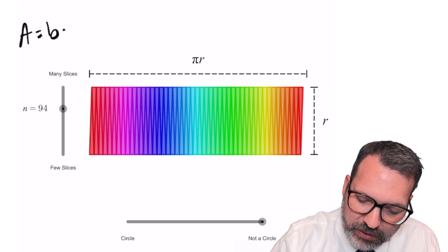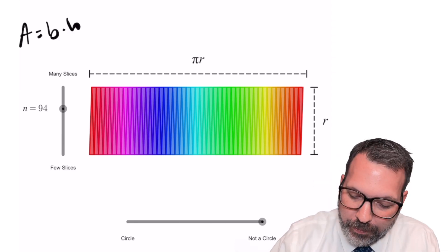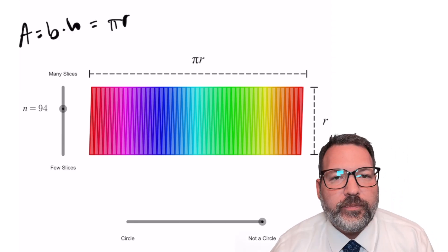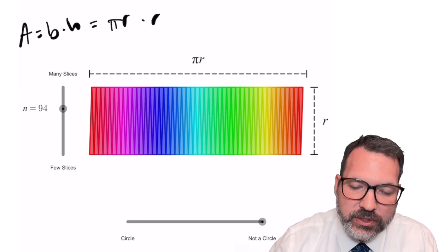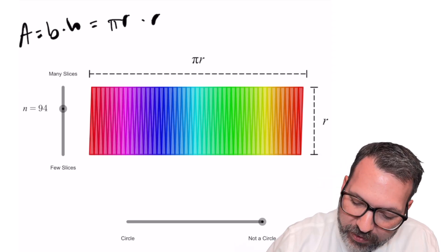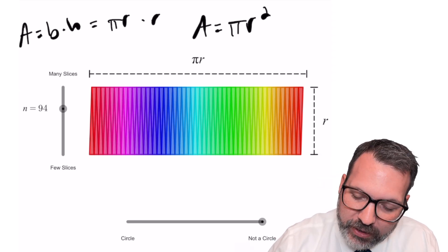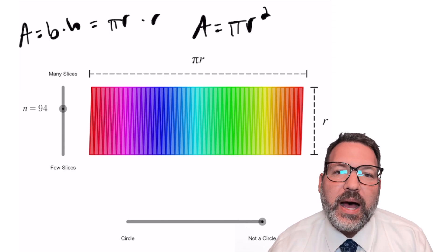Treated that way, of course, this is basically a rectangle itself where our base is that half of the circumference πr and our height is the radius r, and there you have it: πr times r gives us our area formula πr².